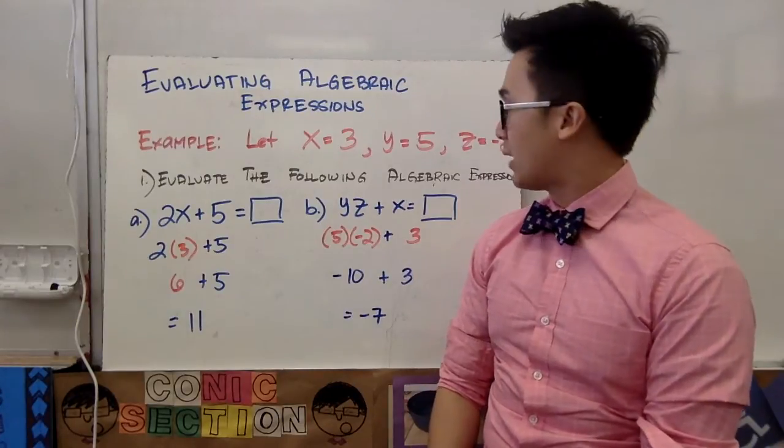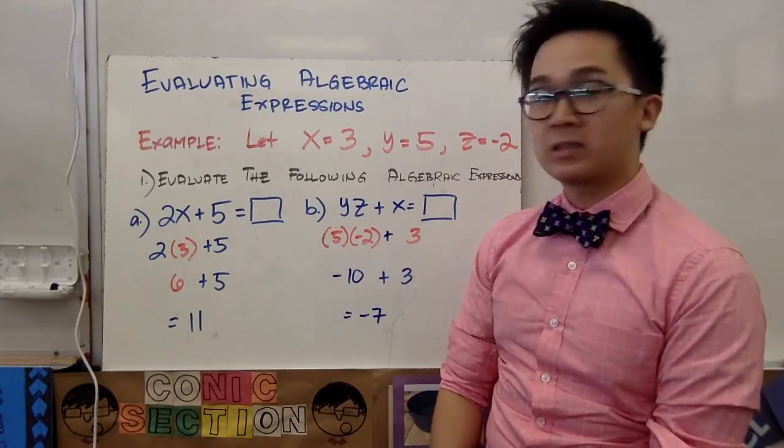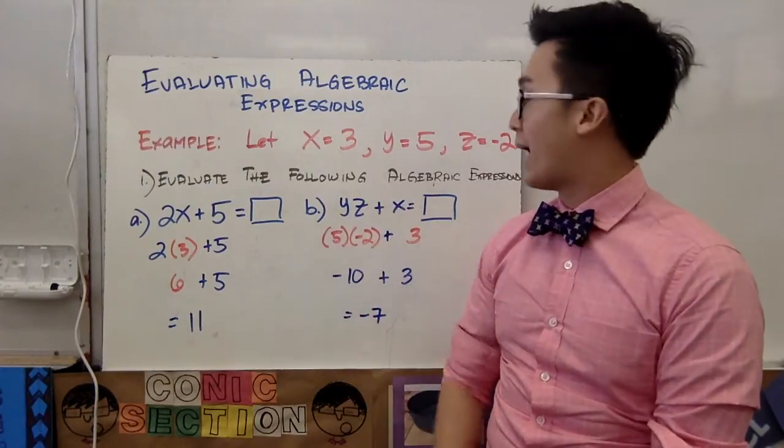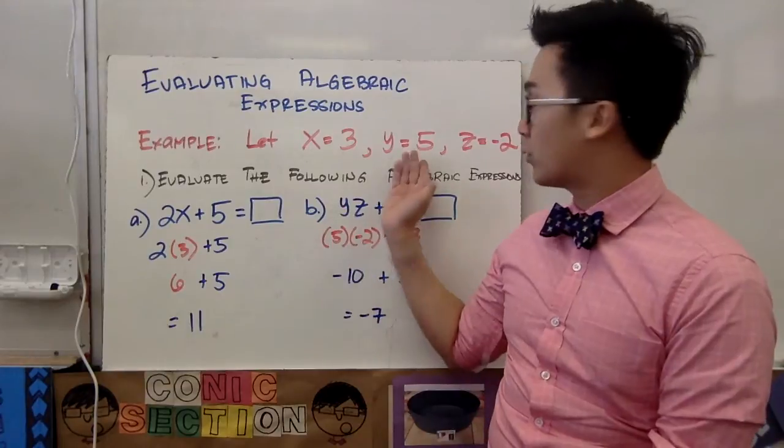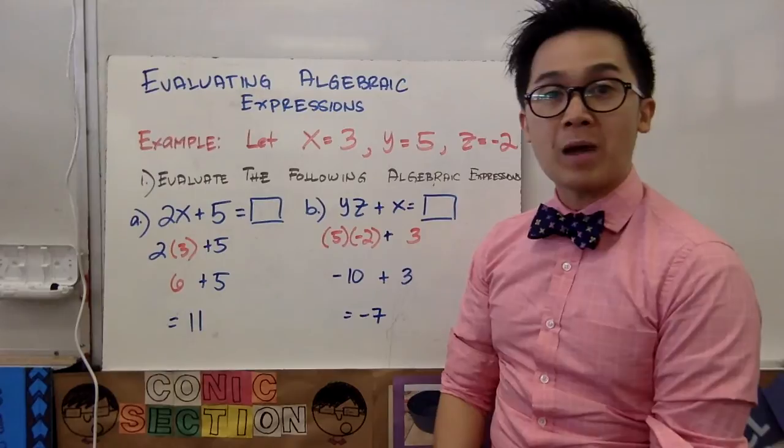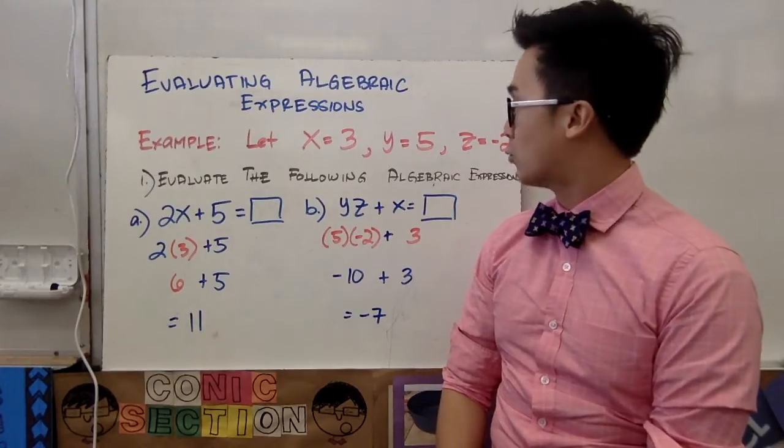And on letter B, we have yz plus x equals whatever the evaluated value of this algebraic expression that we have. So, we know that y is equal to 5, and z is equal to negative 2, and x is equal to 3 from our given values of x, y, and z.